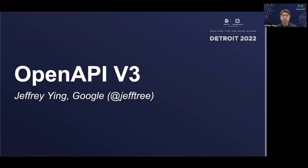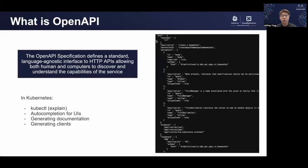Hi, my name is Jeffrey, and I'm a software engineer at Google and a contributor to SIGAPI Machinery. Today I'll be talking about OpenAPI v3, a feature that has gone beta in Kubernetes version 1.24. OpenAPI is a language-agnostic interface in a format that is both human and machine-readable, describing the capabilities of a service — in our case, Kubernetes. It is provided in both JSON and protobuf format. Consumers include kubectl explain, auto-completion for UIs, documentation generation, and clients.